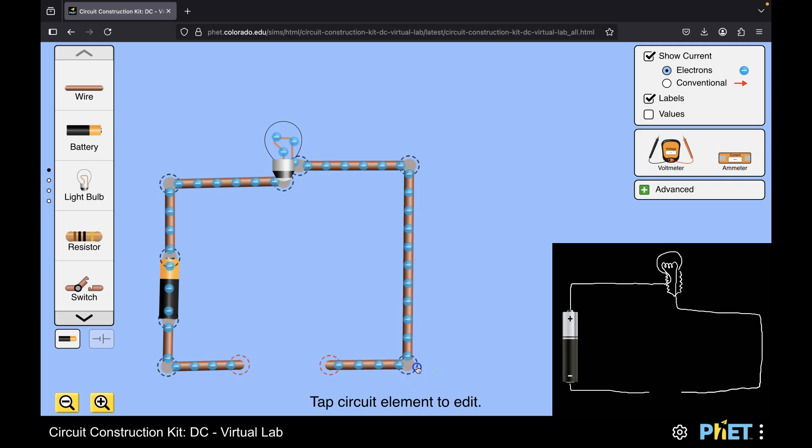So here we are with the circuit with the cell, the lamp, wires and some gap here. Obviously, when there's a gap, the electric bulb is not glowing. What if I placed a conducting wire in between this gap? Of course, the moment I place a conducting wire, the lamp starts to glow and electrons start to flow.